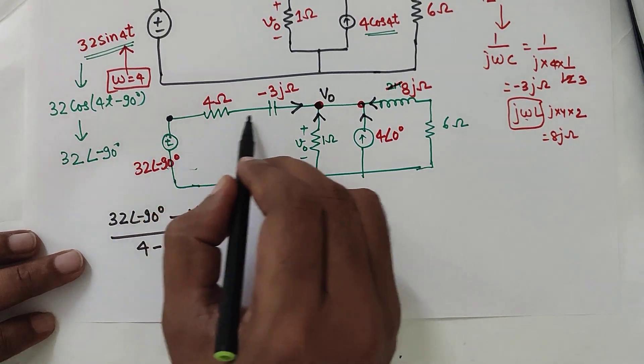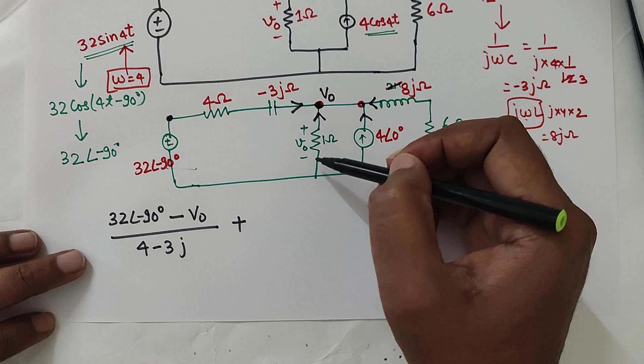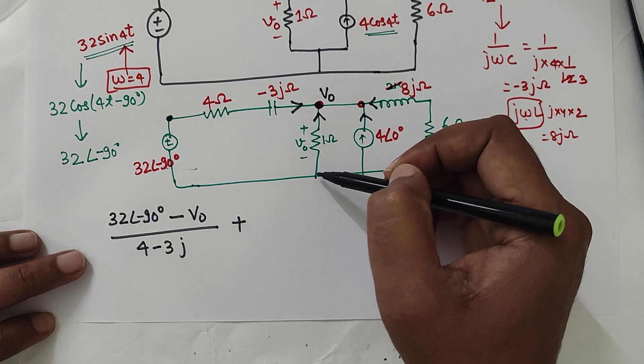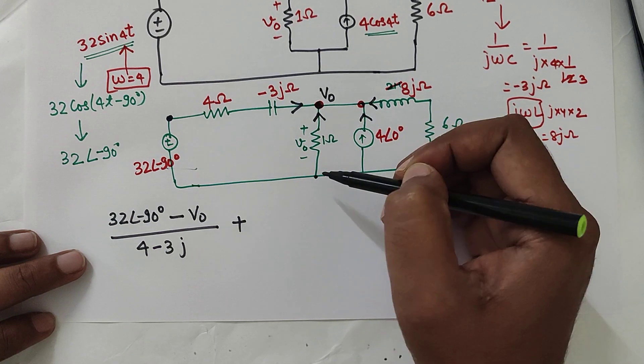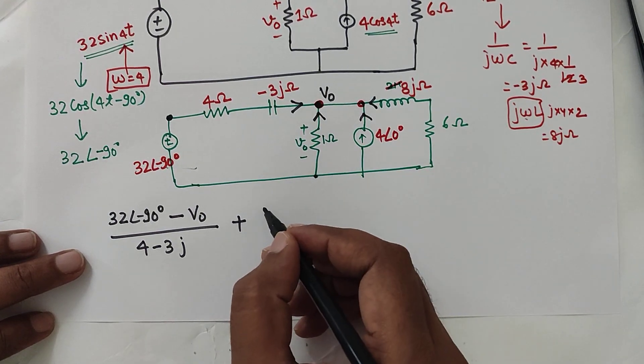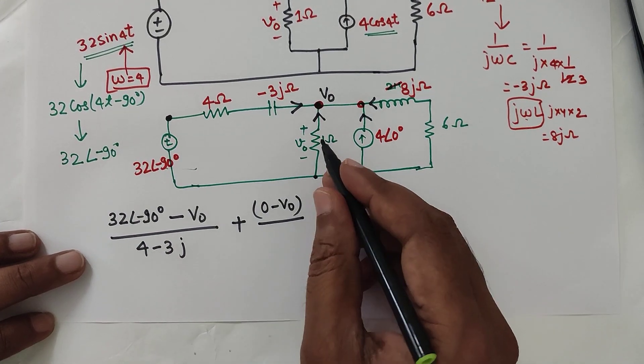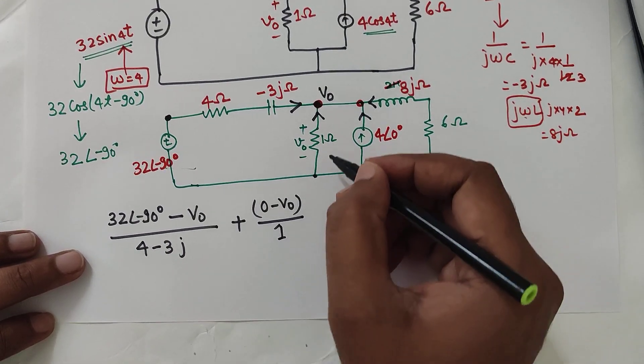Incoming current from this branch is given by this. Then incoming current from the 1 ohm resistor will be, since we are taking direction from reference to this, it will be 0 minus V0. So 0 minus V0 divided by 1. Impedance is 1.